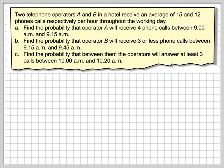In this video we're going to look at two telephone operators with a changing time interval and see what effect it has on the Poisson probability calculations.